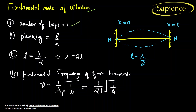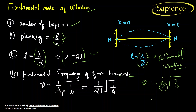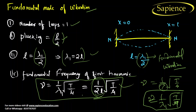In the fundamental mode of vibration, the number of loops equals 1 and the plucking distance is L/2. The length equals lambda₁/2, so lambda₁ = 2L. The fundamental frequency (first harmonic) is: f = (1/lambda) × root(T/mu). Substituting lambda₁ = 2L gives the fundamental frequency formula for the first harmonic.